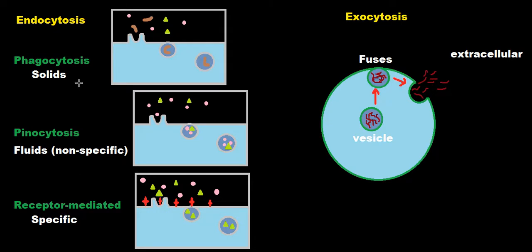Let's talk about phagocytosis. As you can see, these little brown spots are very large solid particles. The plasma membrane envelops these solid particles, pulls them inward, fuses together, and breaks away — forming a vesicle inside the cell containing that solid particle.